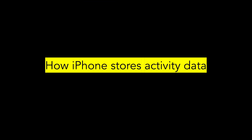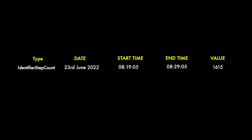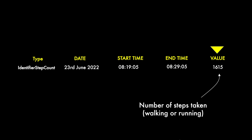Let me first explain how iPhone stores the health data. Every physical step you take, if you have an iPhone with you, it will create a data record. This data record has a type indicating a step count identifier, a date, a start time of your activity, an end time of the activity, and a value which indicates the number of steps taken. These steps could correspond to any movement — walking or running.